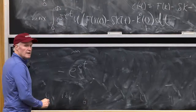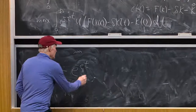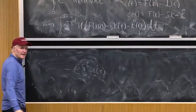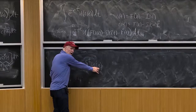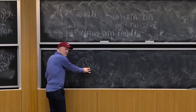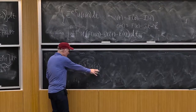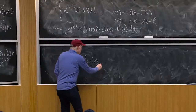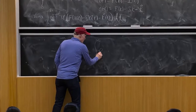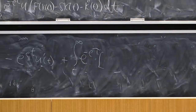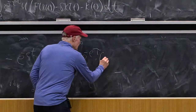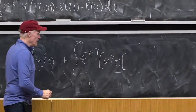The first-order condition: the cost of increasing investment today is e to the minus rho t times u-prime of t. That is, I give up a unit of consumption which is worth u-prime — that's how much utility I would have gotten today from that unit of consumption. That's the cost of creating another unit of capital: foregone consumption.